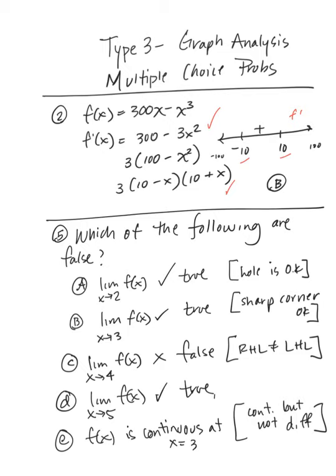Type 3, graph analysis, multiple choice problems. In question 2, we're given a function 300x minus x cubed, and asked to find which intervals the function is increasing. We're going to take the first derivative, set it equal to 0, find the critical values, and use the number line to figure out where the first derivative is positive. We find that's between negative 10 and 10, so our choice is B.